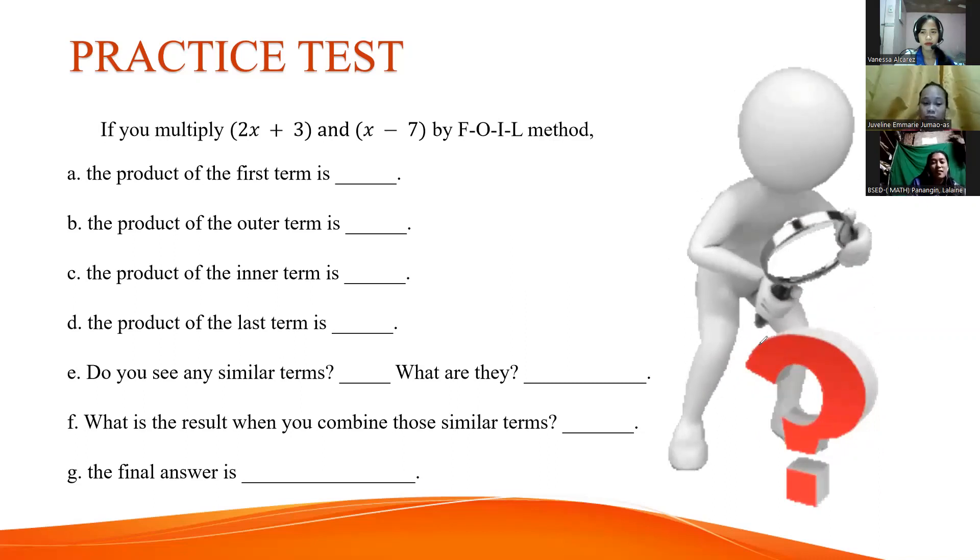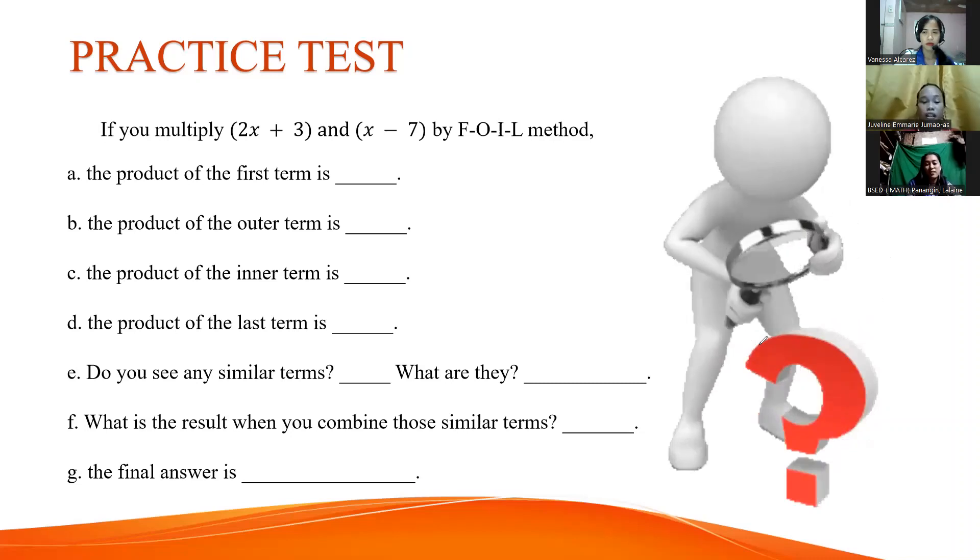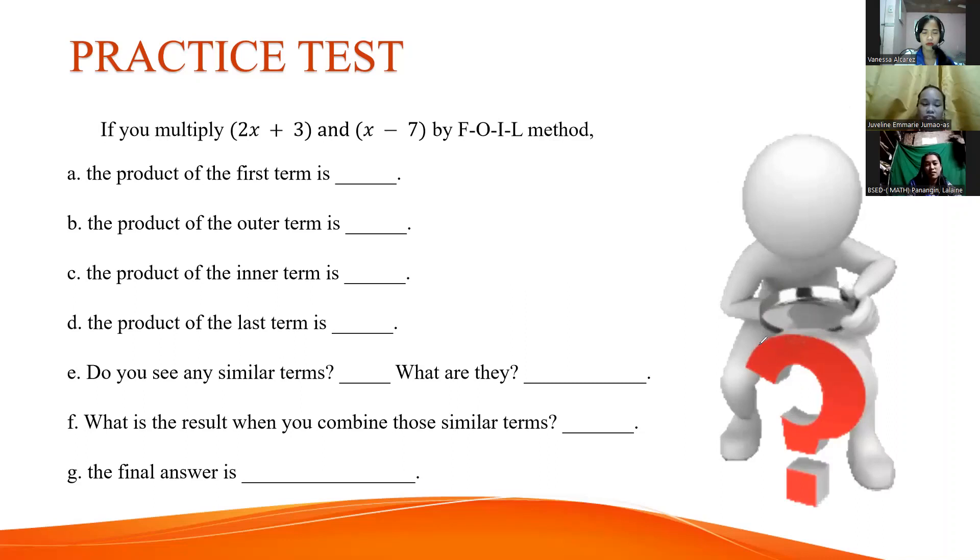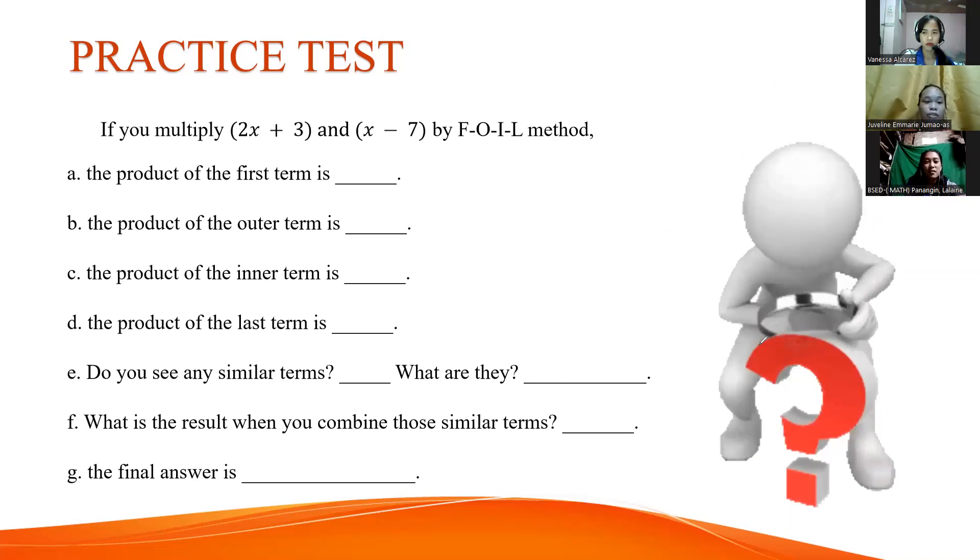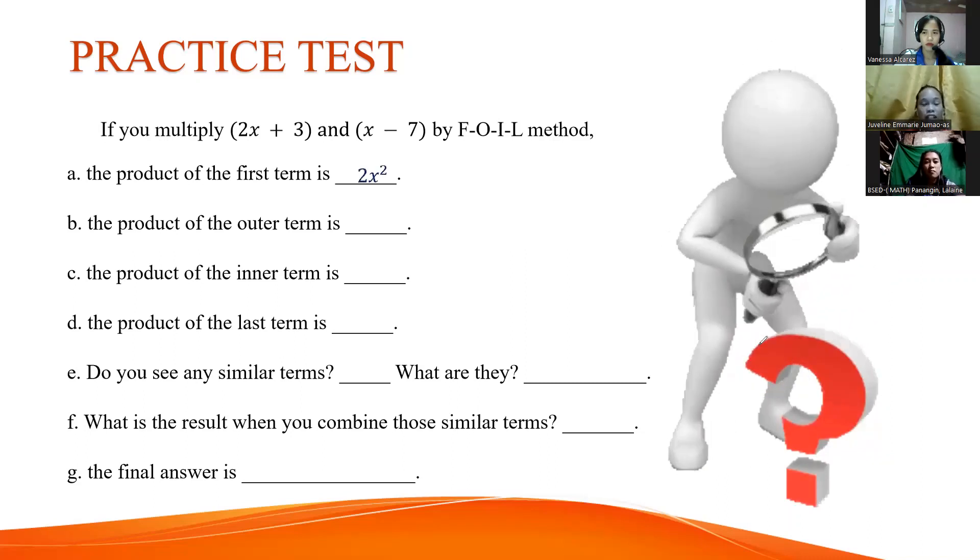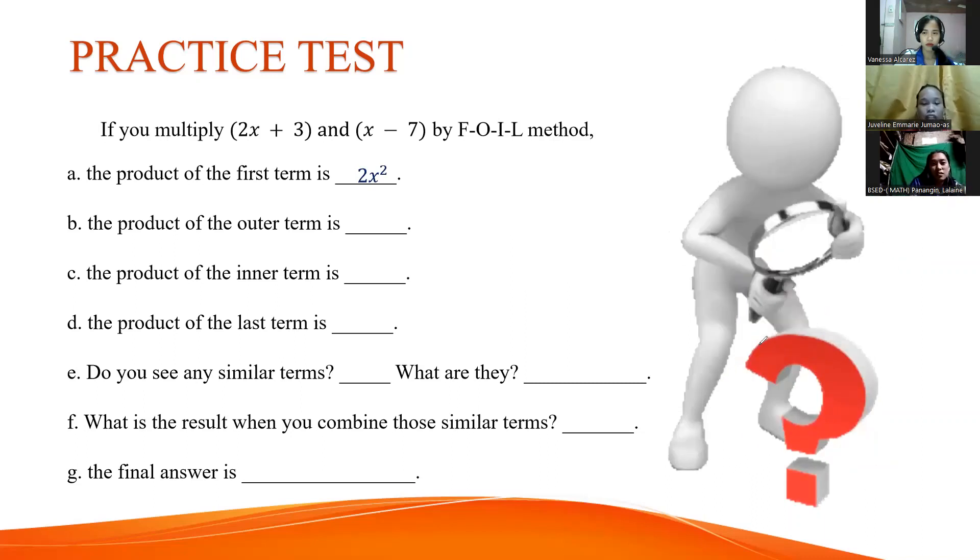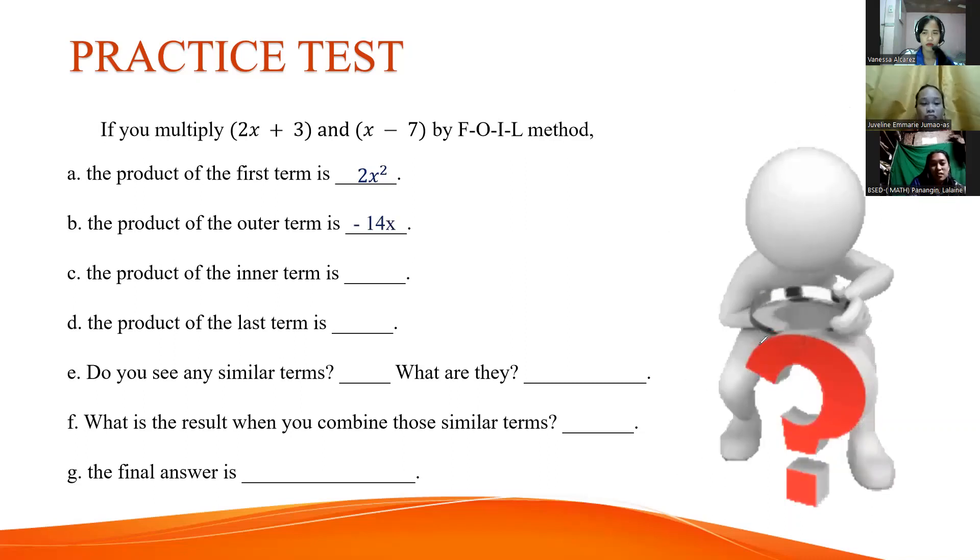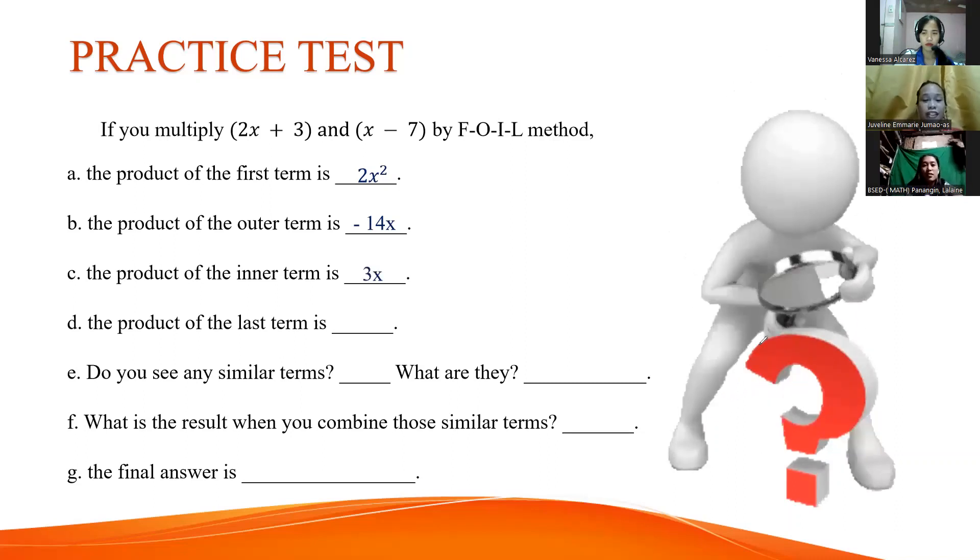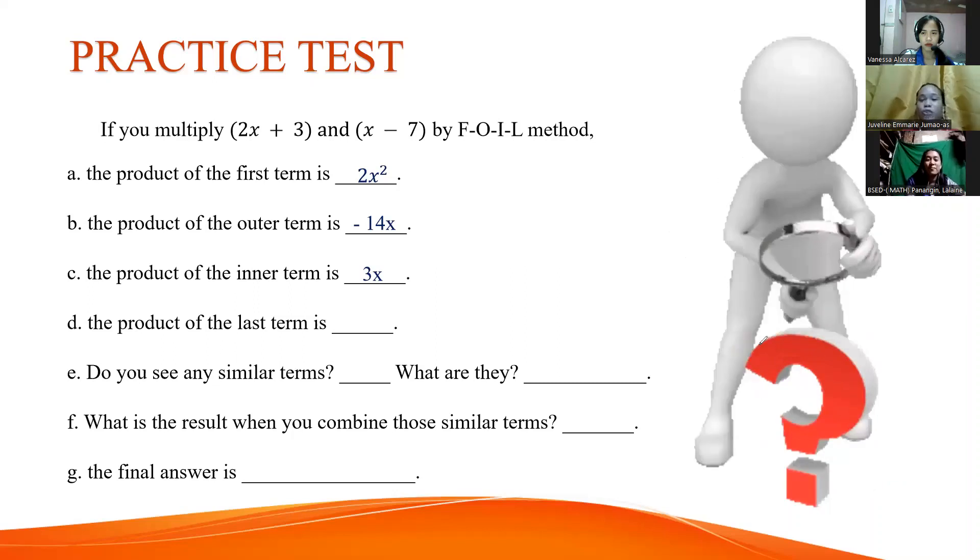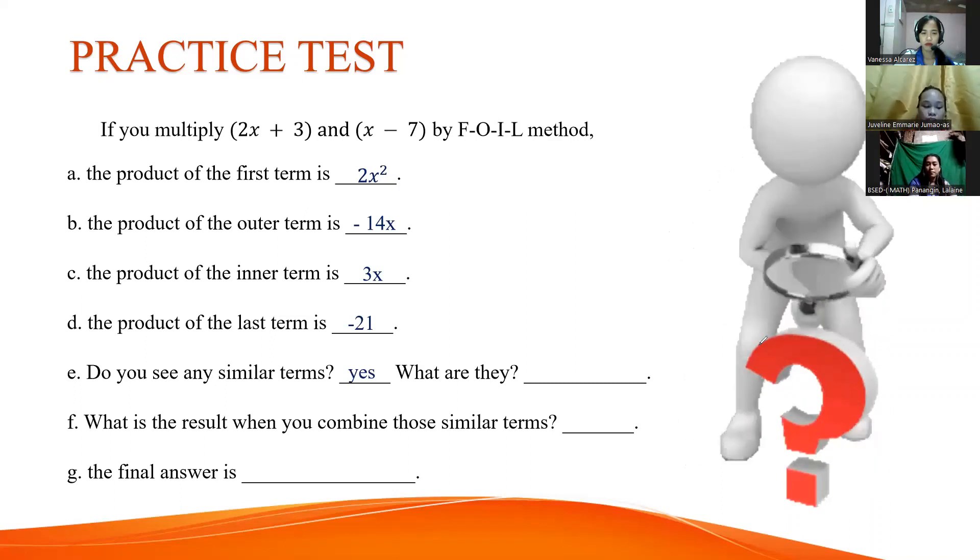Take your time, class, to answer our practice test. Thank you so much, Mark, John, Russell, Sandra, Vinny, Ico, and Barbie. Here is the final answer. The first term is 2x squared. Thank you, Mark. B is the outer term, negative 14x. I'm sorry for that. Letter C is inner term, 3x. Thank you, Russell. Letter D is the last term, negative 21. That's correct, Sandra.